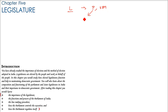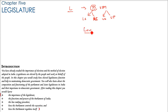Parliament is Lok Sabha and Rajya Sabha. The Vidhan Mandal is Vidhan Sabha and Vidhan Parishad. We will discuss the importance of these Legislatures, the function and power of the Parliament of India, the law-making procedure, how a law is made, how Parliament controls the Executive, and how Parliament regulates itself.